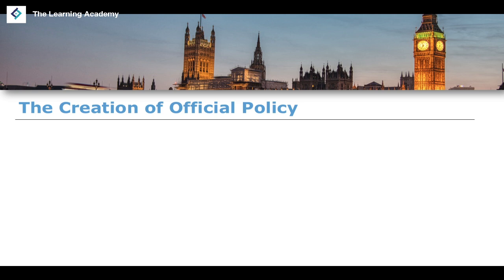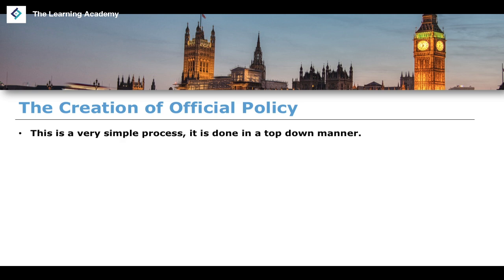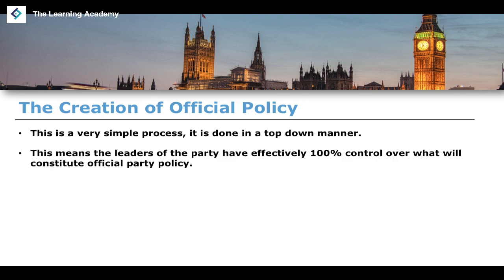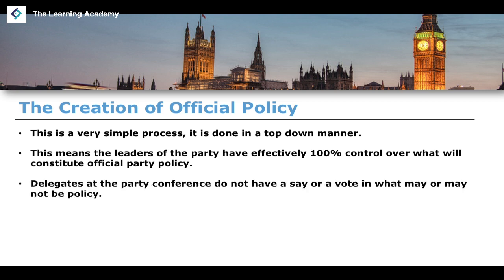The final point is the creation of official policy, which is a very simple, top-down process. Unlike the Labour Party, where conventions vote on manifesto content, within the Conservative Party the party leadership has effectively 100% control over official party policy. Delegates at the party conference do not have a say or a vote on what may or may not be classed as policy.